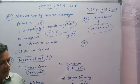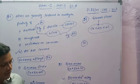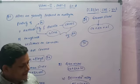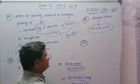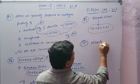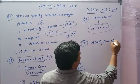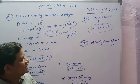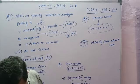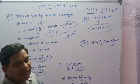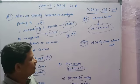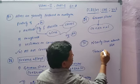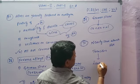Bit number 30: Transition elements form alloys easily because they have nearly the same atomic size. Due to nearly the same atomic size, transition elements have the ability to form alloys. In transition elements, lanthanide contraction is present.